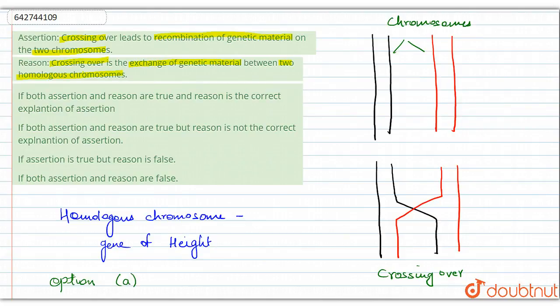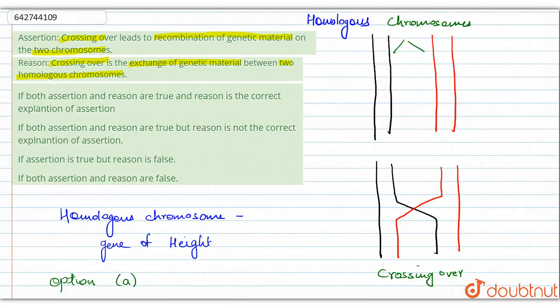Both the assertion and the reason are correct, and the reason is the correct explanation of the assertion. Crossing over exchanges genetic material through recombination, and this occurs between homologous chromosomes - it does not occur between different chromosomes.